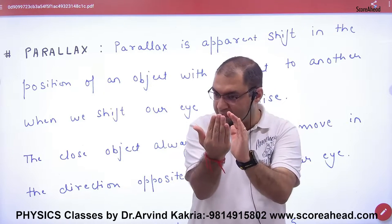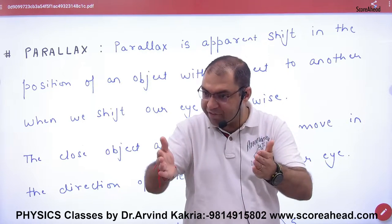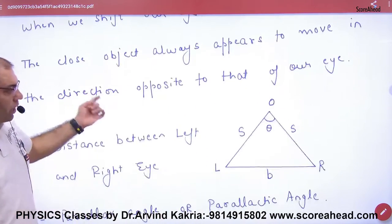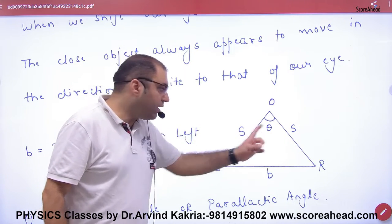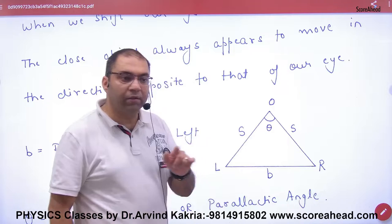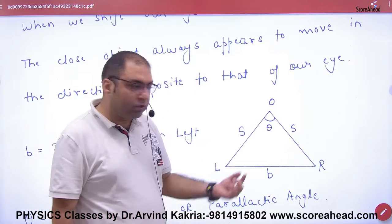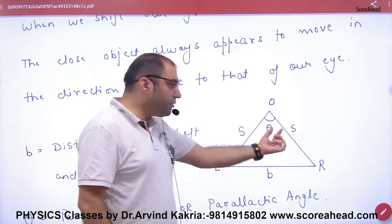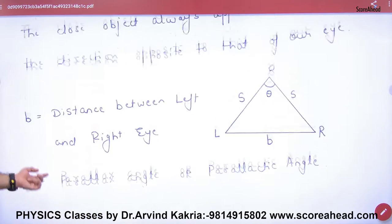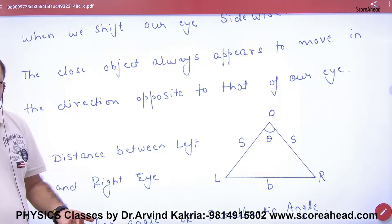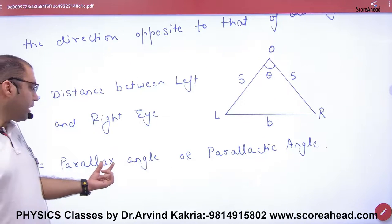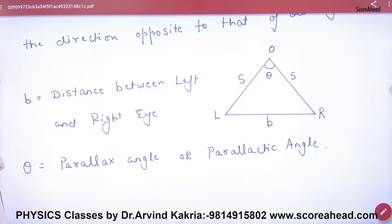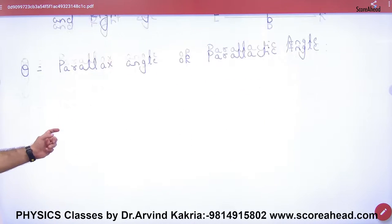Two points of view of one object — left is different, right is different. This is called parallax, and the angle subtended by the object is called the parallax angle. This is my left eye, this is my right eye, and the distance between both eyes is B. The distance of the object is S, and the angle is θ. Since arc equals B and radius equals S, we get S = B/θ.